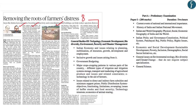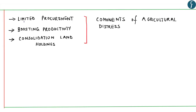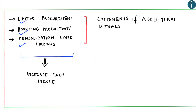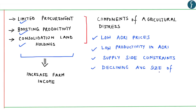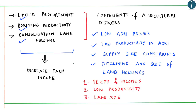This topic of agrarian distress in your preliminary examination forms a part of Indian economy, whereas in your mains it gets covered under GS paper 3. The authors in this article have focused on limited procurement, boosting productivity and consolidation of land holdings as key areas to increase farm income. Some components of agricultural distress include low agricultural prices, low productivity, supply side constraints and declining average size of land holdings. Based on these, the article has been divided into prices and incomes, low productivity and land size.